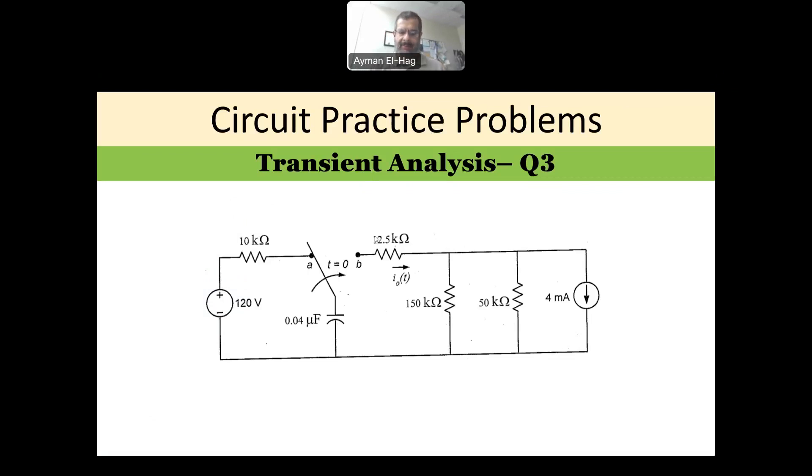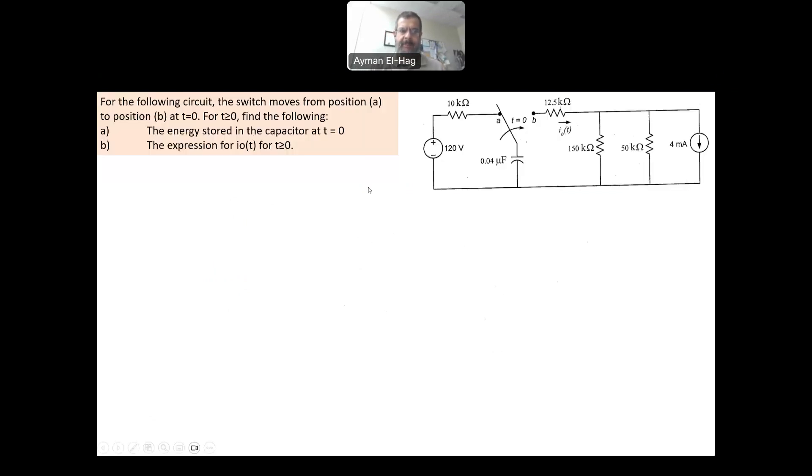Let's see the question. Here we have a capacitor originally connected to the 120V supply and then at t equal to 0, it moves from position A to position B. You are asked first, what is the energy stored in the capacitor? And then what is the expression for I0 of T for T greater or equal to 0?